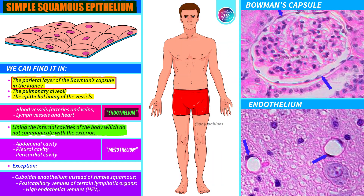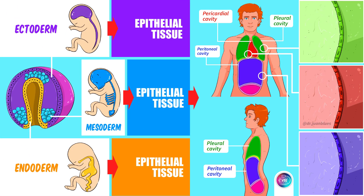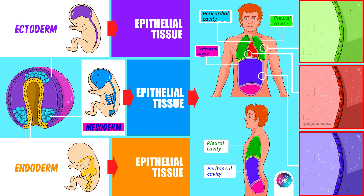The epithelium that comes from the mesoderm and lines the cavities that do not communicate with the outside — such as the abdominal, pleural and pericardial cavity — is called mesothelium. Here we see the internal cavities of the body which do not communicate with the exterior, and how they are lined on the inside by a simple squamous epithelium. We are going to take a closer look at some of them.